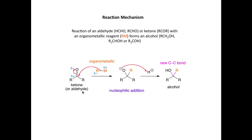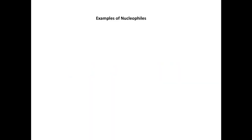Because we're starting with a ketone, the reaction leads to the formation of a tertiary alcohol, and this is the new carbon-carbon bond that we've formed. But we could of course use methanal or other aldehydes in this reaction to form other types of alcohols.